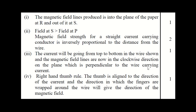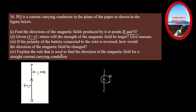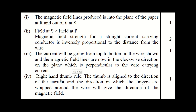Explain the rule used to find the direction of the magnetic field for a straight current-carrying conductor. Be very careful — the question says 'explain the rule,' not just 'name the rule.' You must explain the right-hand thumb rule: the thumb is aligned in the direction of the current, and the direction in which the fingers are wrapped around the wire gives the direction of the magnetic field.